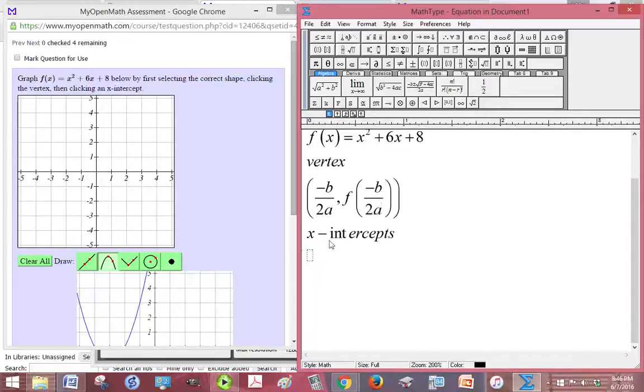In our problem, a is equal to 1 and b is equal to 6, so that's all the information we need there to get that. So let's see, negative b over 2a, then, using those values, is going to be negative 6 over 2 times 1.